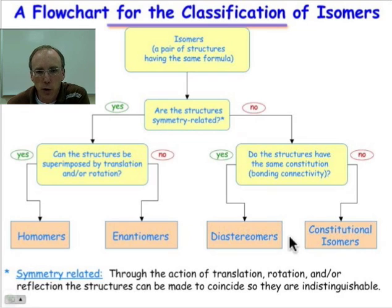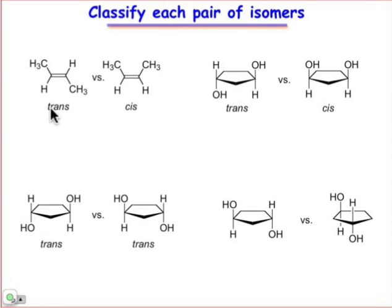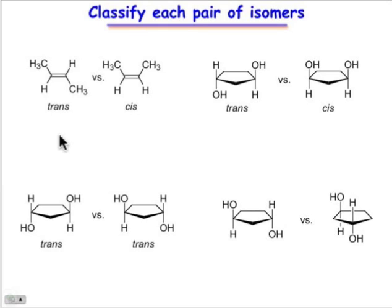Let's put this to work with some relatively straightforward examples. In the first case, we're dealing with trans and cis butene. Trans and cis butene cannot be made to superimpose by any action of rotation, reflection, or translation. So we get to the first question and the answer is no, and we have the same connectivity, so they must be diastereomers.